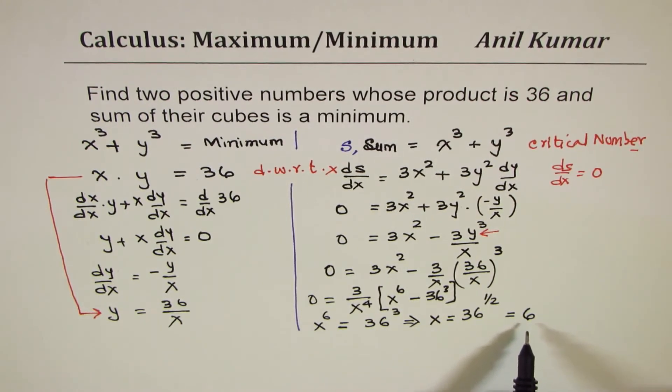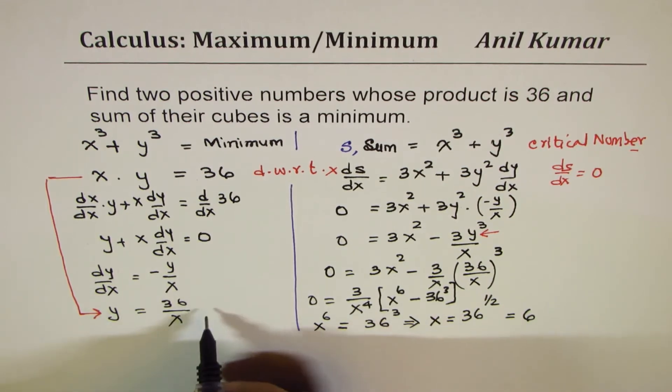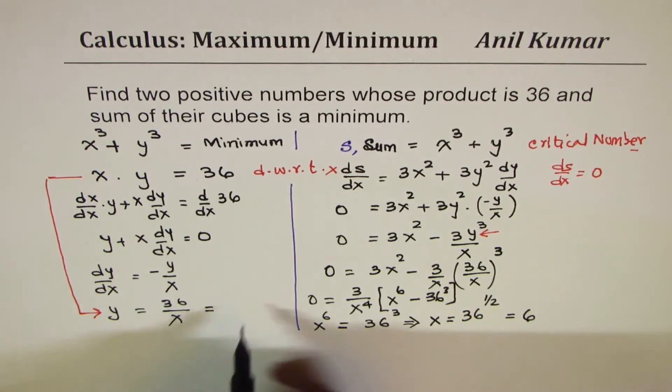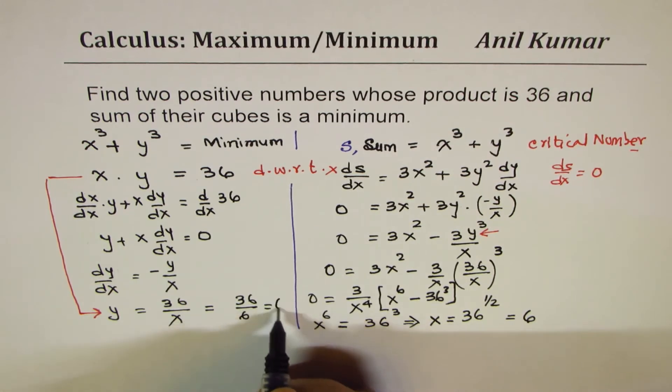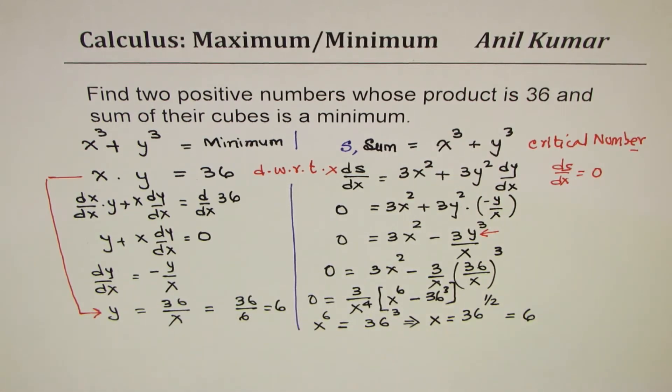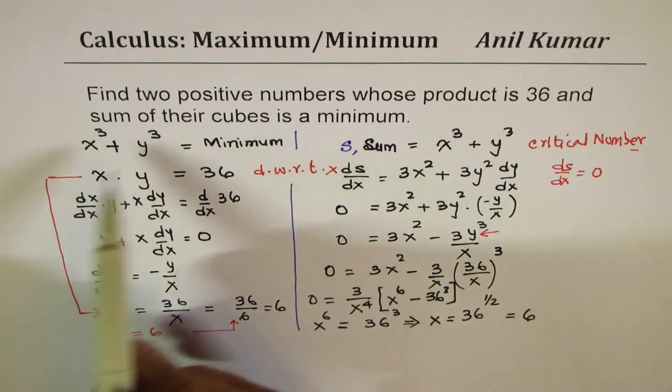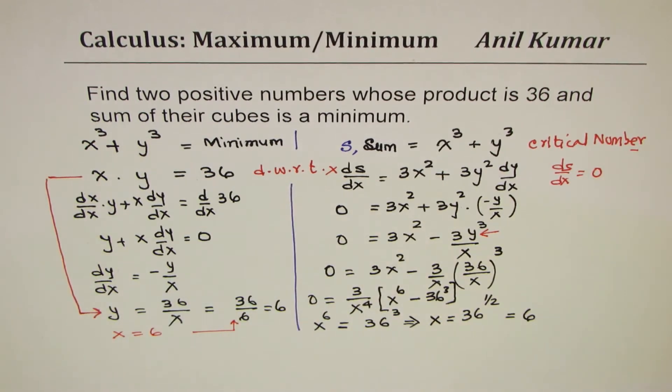Now since x is 6, what should be y? Since x is 6, we can write 6 here: 36 divided by 6 is also 6. This is because we just found that x equals 6 and therefore y is also 6. So find two positive numbers whose product is 36 - in fact we got both as 6.